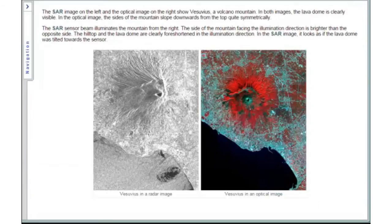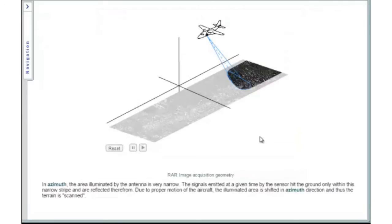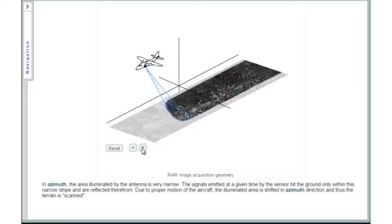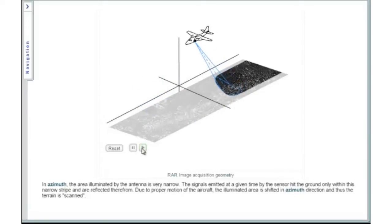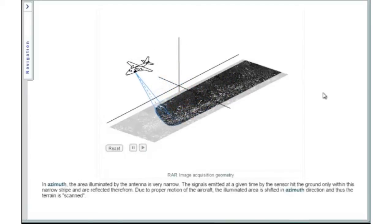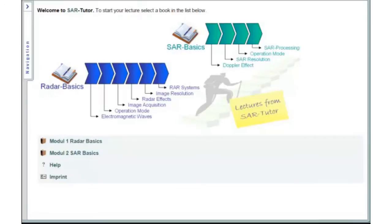We currently provide two e-learning courses, one focusing on radar basics, one on SAR. The SAR Tutor uses a variety of multimedia and hypertext techniques to support the e-learning process. Interactive sketches and animations allow the interpreter to explore the information contained in these SAR images. The SAR Tutor includes two online courses, one on radar basics and one on SAR technology. It is aligned to look like a manual with e-learning modules, chapters and sections.